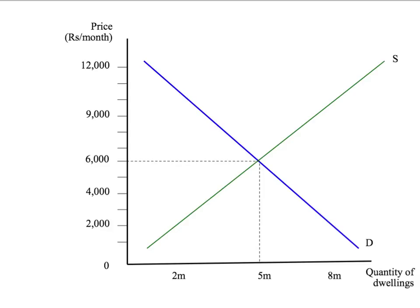Let's start by thinking about what the Mumbai rental market might look like in the absence of rent control. We would expect the market to move to equilibrium where demand and supply for properties cross, leading to a rent of say 6,000 rupees per month on an average property and around 5 million properties rented in Mumbai — enough to house the entire population of just over 20 million people.